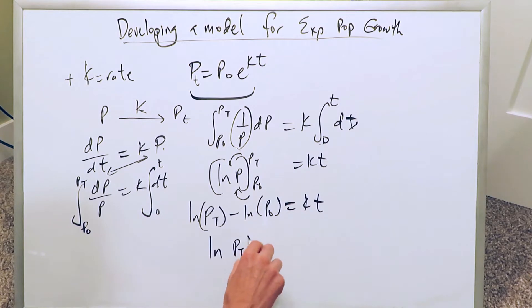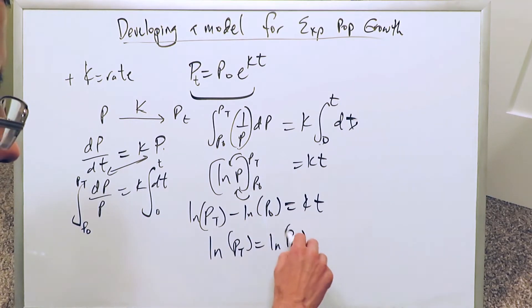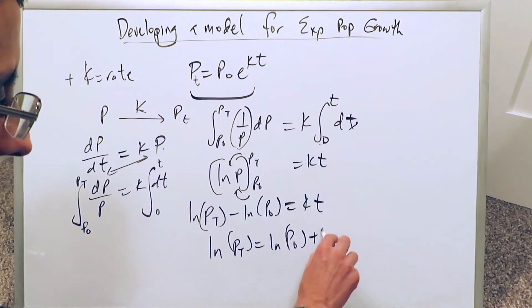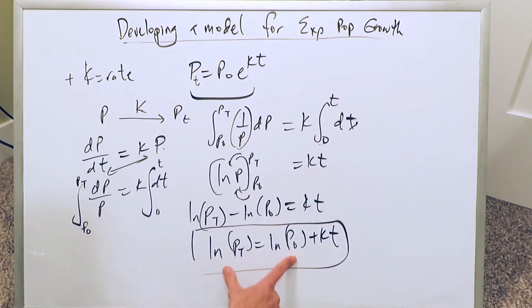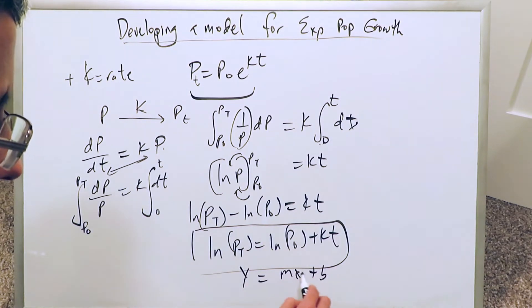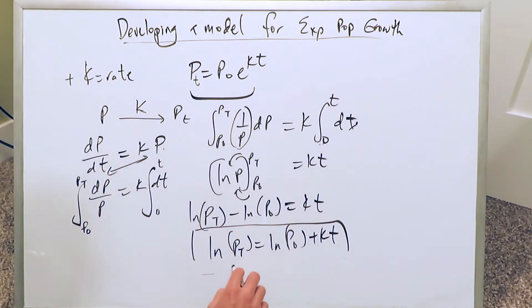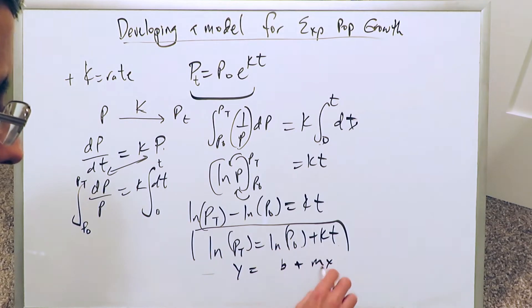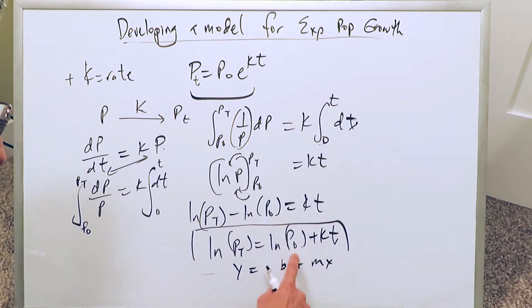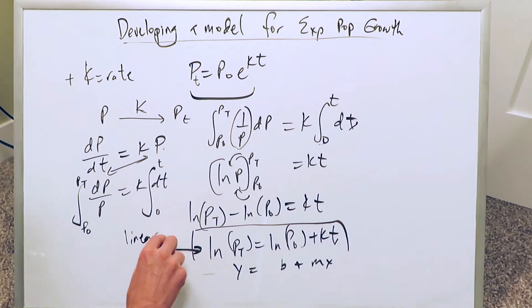You can rewrite this as ln(Pt) = ln(P₀) + kt. If you look at this as a logarithmic equation, it very well looks like y = mx + b, or y = b + mx. Here my slope m is k, my x is t, my y-intercept is ln(P₀), and my y component is ln(Pt). This would be a linear equation — in terms of a graph it would be linear, but expressed in terms of natural log.